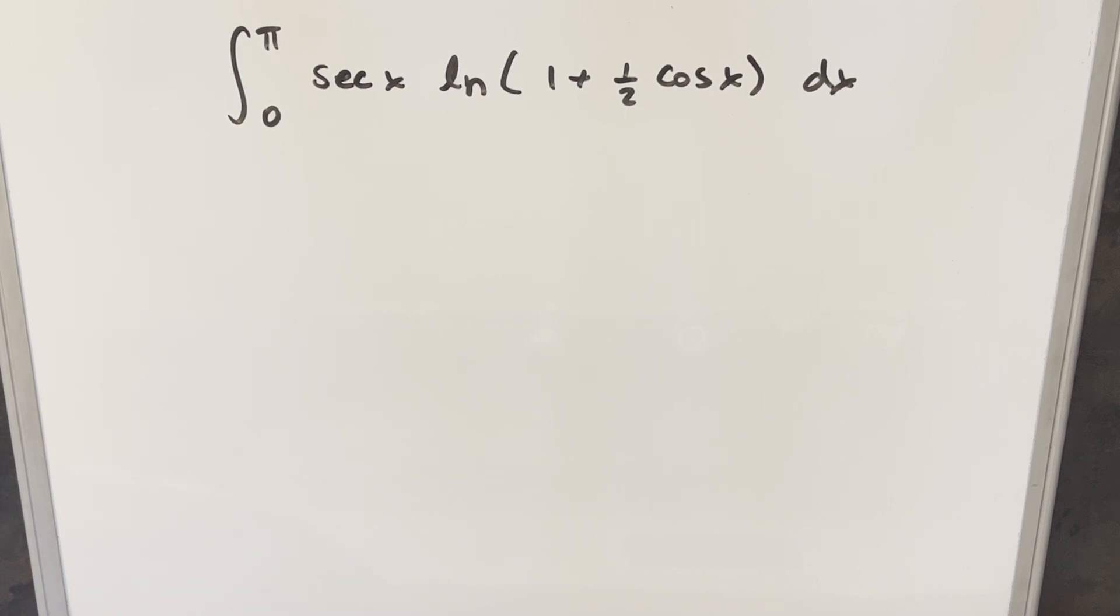Okay, we have a pretty tough problem here today. I think I'm going to try to speed integrate it just because I feel like it. So we've got the integral from 0 to pi of secant of x times natural log 1 plus half cosine x dx.